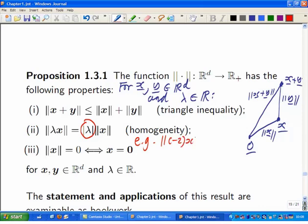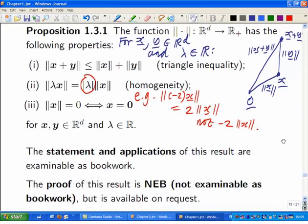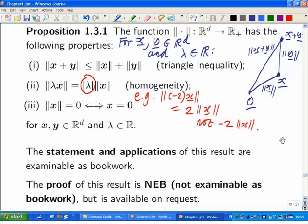And the last one: if you're thinking of norm of x as the distance from x to 0, then the only way you can be distance 0 from the origin is if you're at the origin. So the norm of x is 0 if and only if x is actually at the origin. So you're supposed to know this result and be able to apply it, but you don't need to be able to prove it as bookwork. You could be asked as an exercise to prove some portions of this, but not a bookwork part of an exam question.